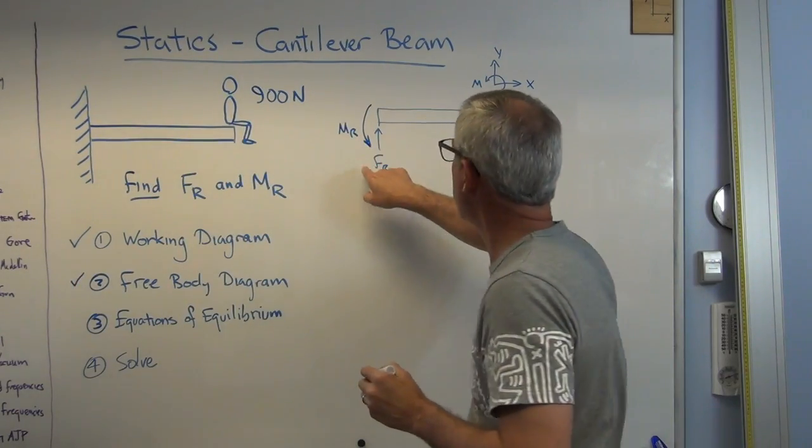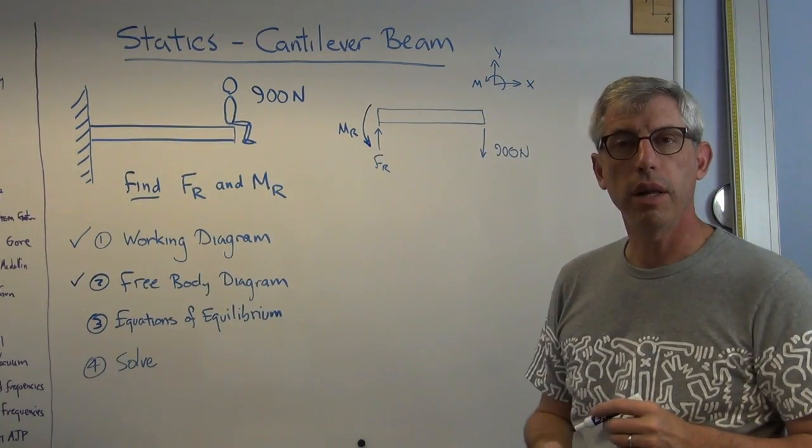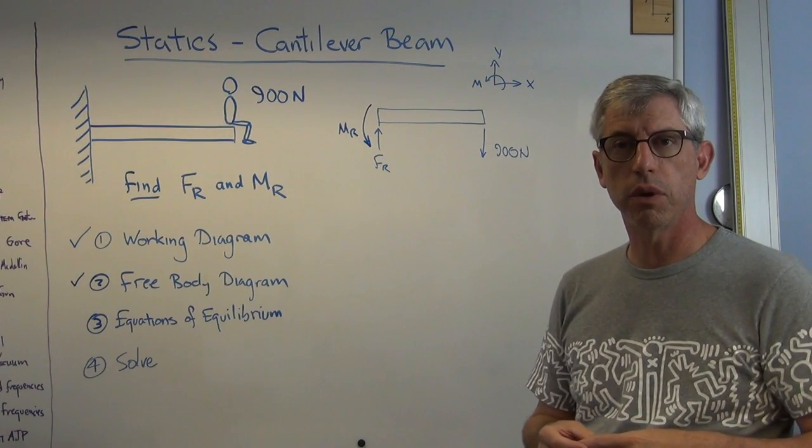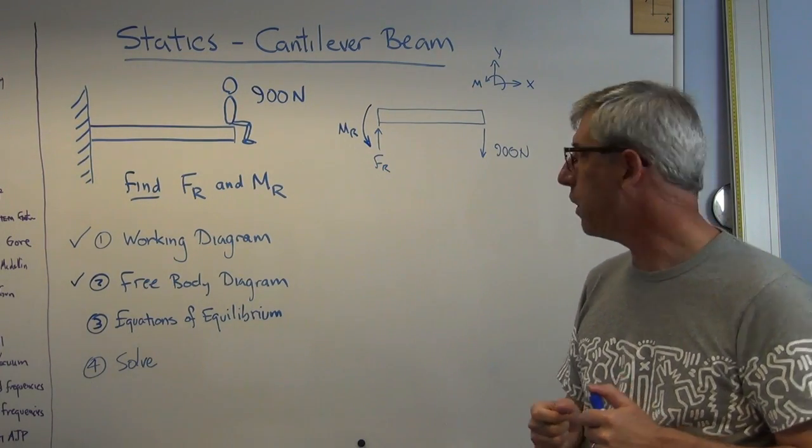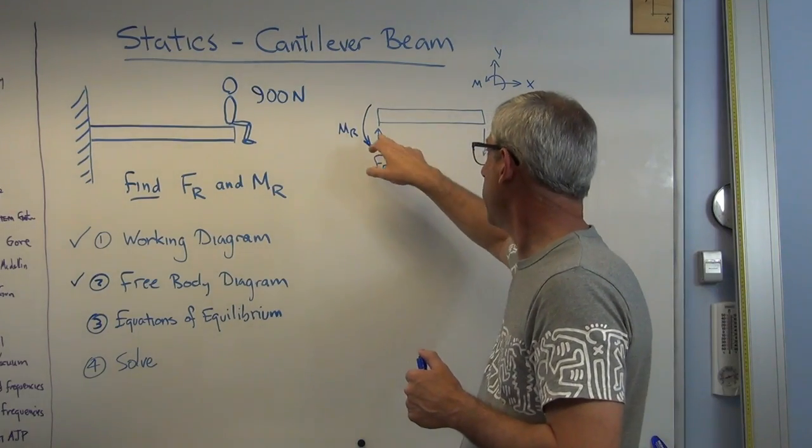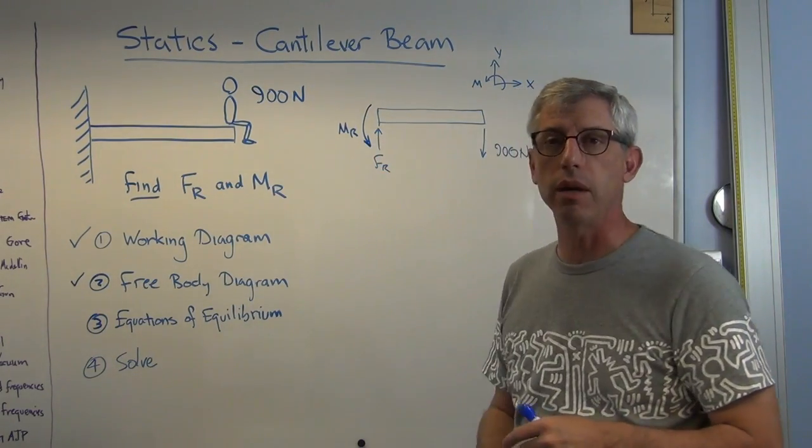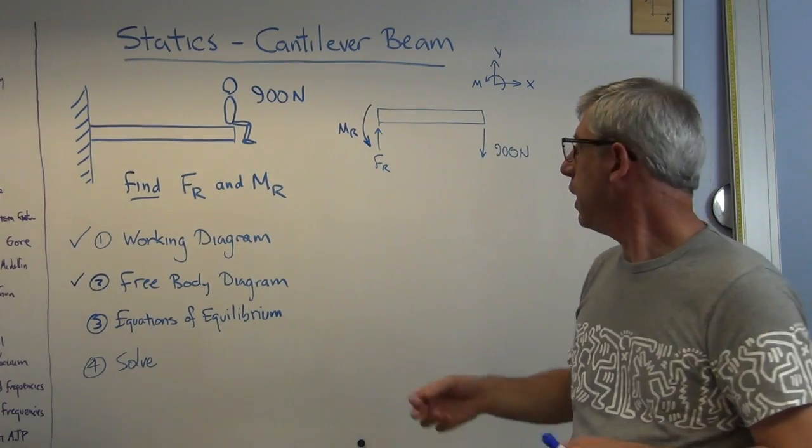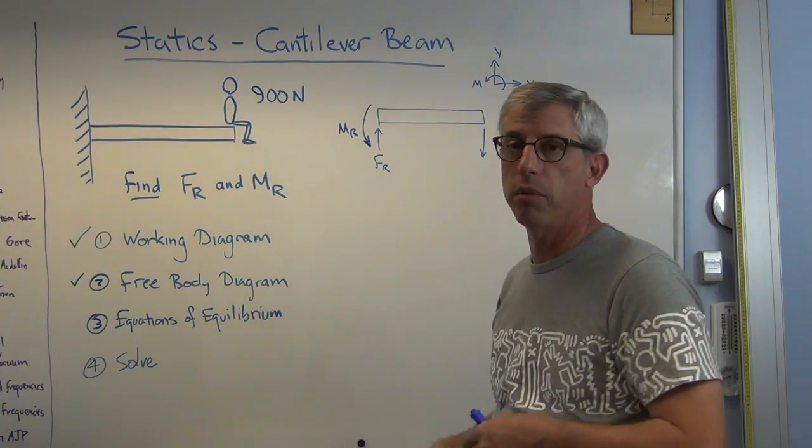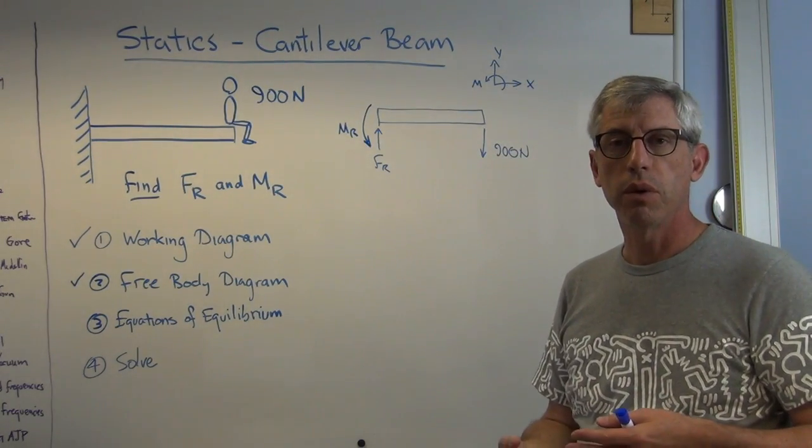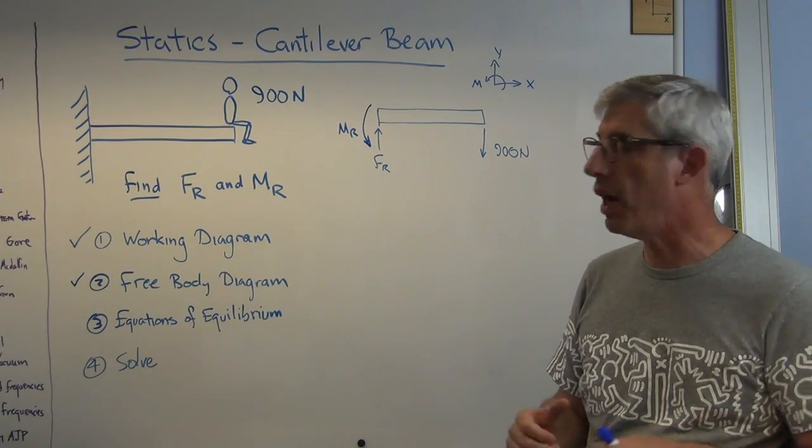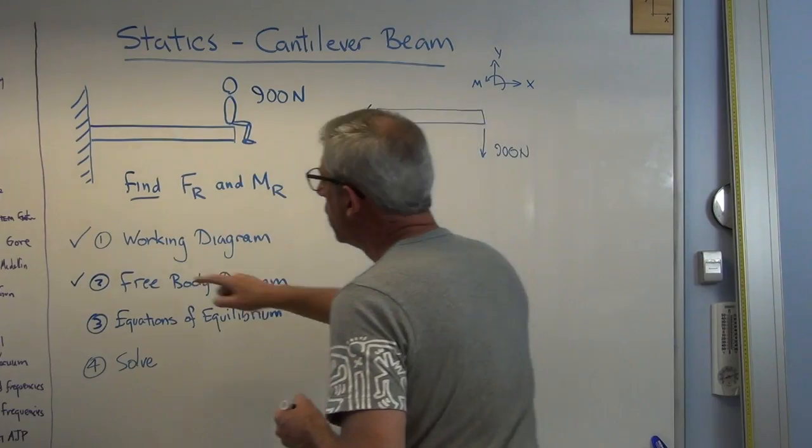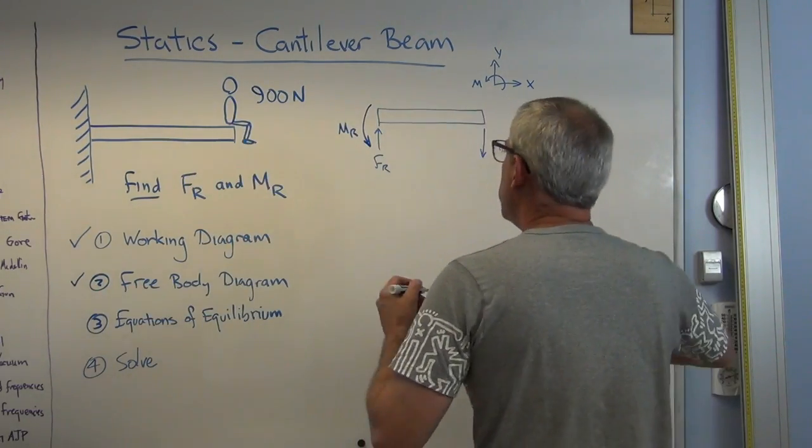By the way, what if I guess wrong on the resisting moment and the resisting force? Well, if I get those wrong, they'll come out negative. The math will take care of me. If I were to draw this with the arrow down, my resisting force would be negative instead of positive. That's okay. That's the math kind of taking care of you.